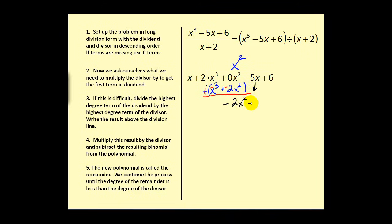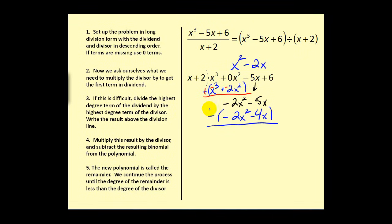Bring down the next digit and continue this process. What times x would give us negative 2x squared? That would be negative 2x. Now we multiply this term by the divisor, giving us negative 2x squared minus 4x. Again, we are supposed to subtract, but instead we add the opposite — change to addition, change that sign and change that sign. We can see this gives us 0, and this would be negative x.